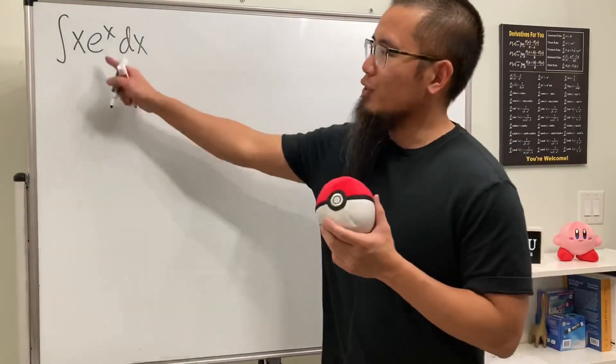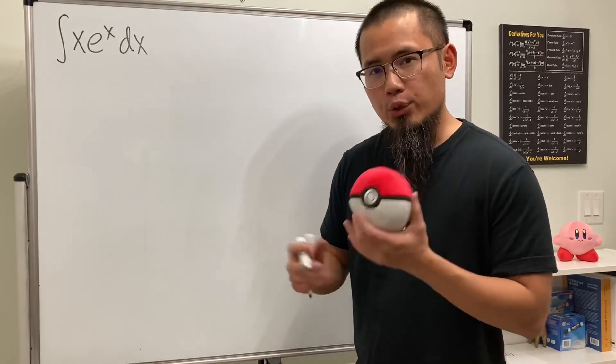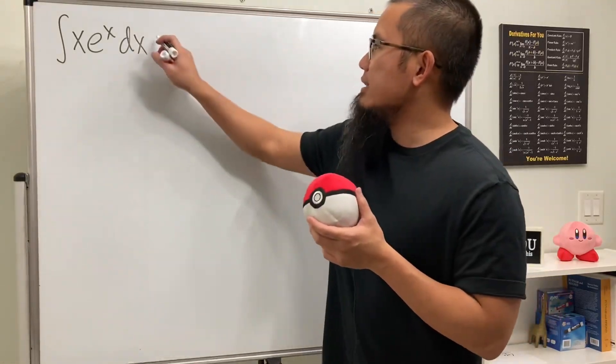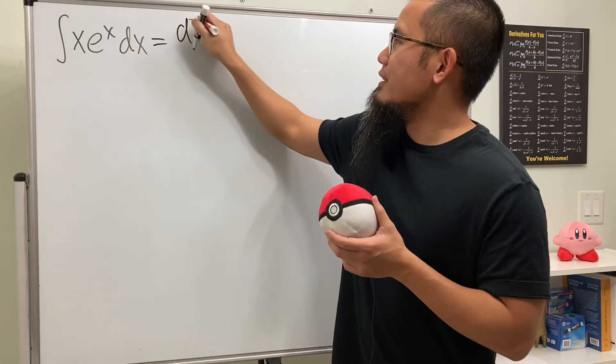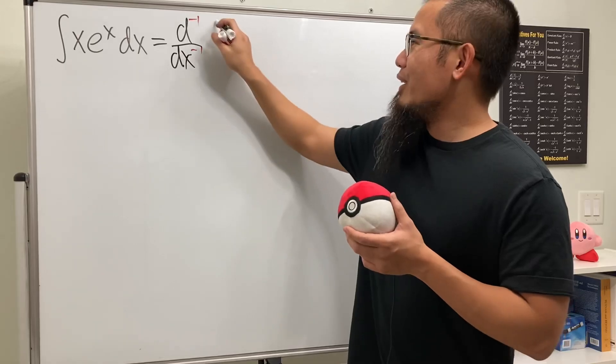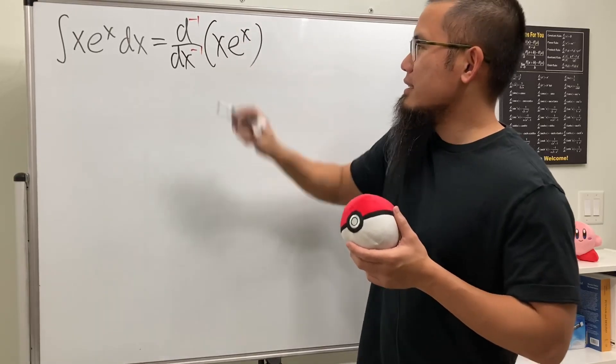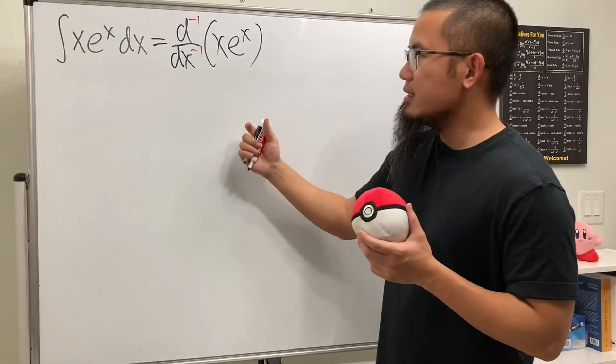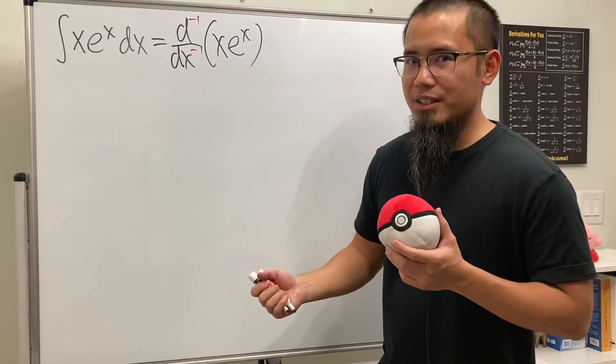When we integrate a function, it's just the same as doing the reverse derivative, right? So we can look at this as the negative first derivative, d^(-1)/dx^(-1) of the function x times e^x. And then we are going to find a formula for the nth derivative of this, and then plug in negative 1.